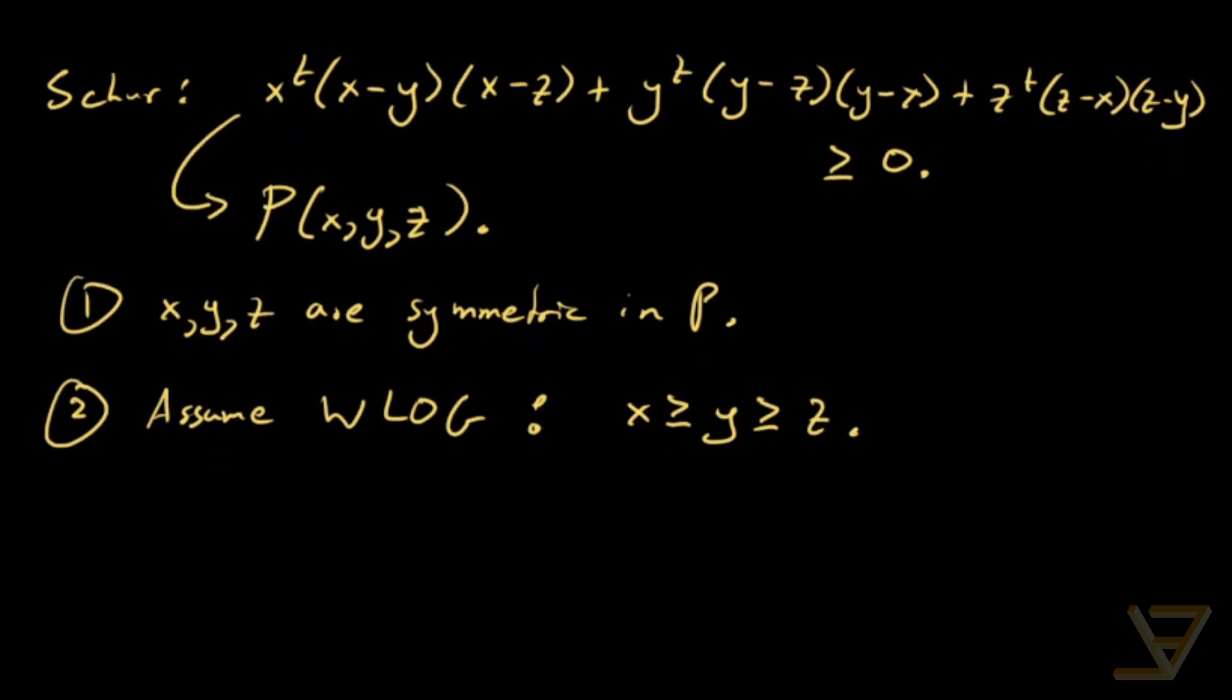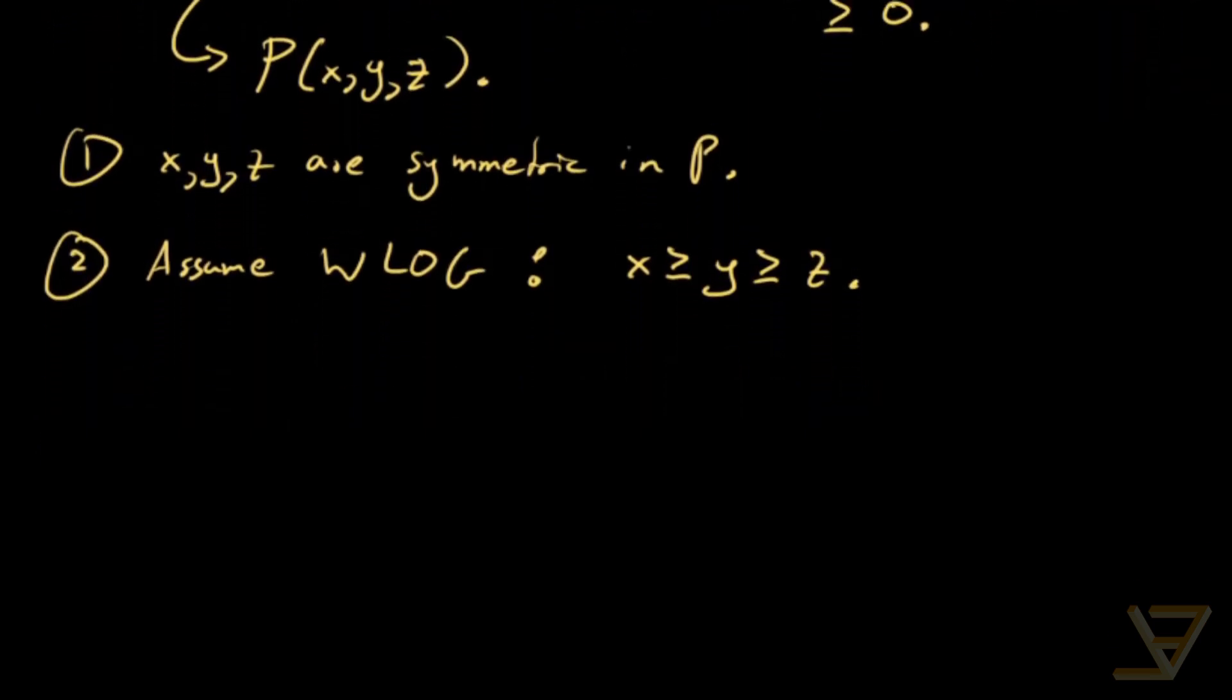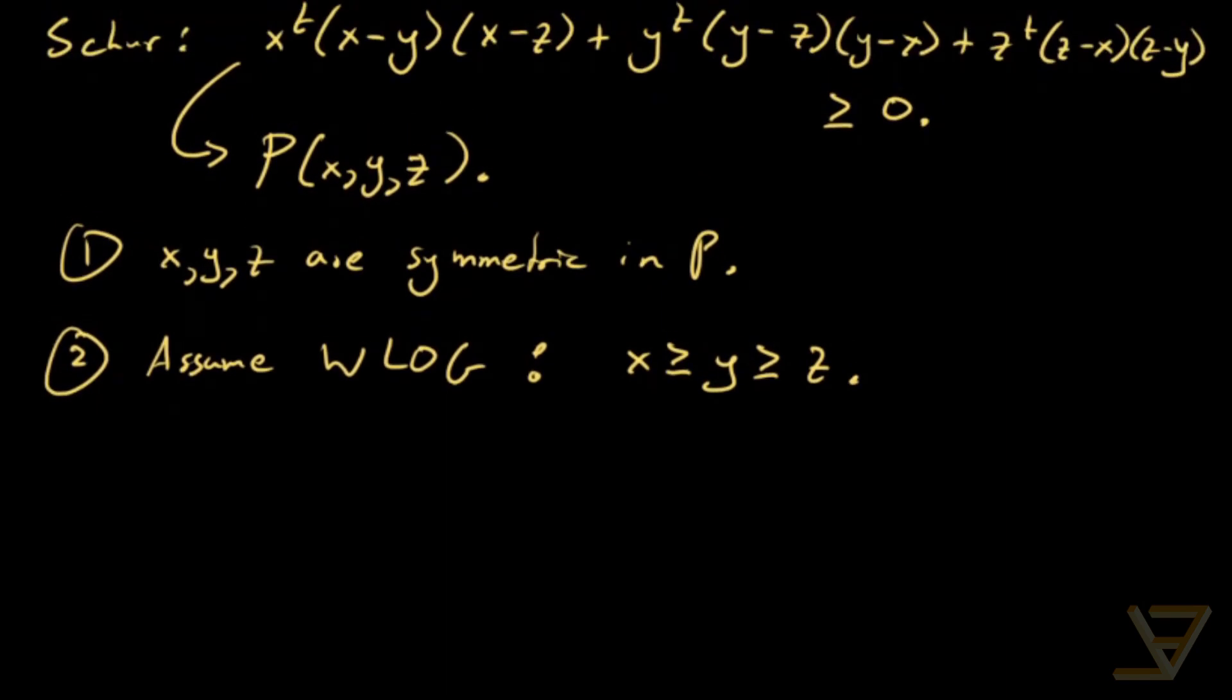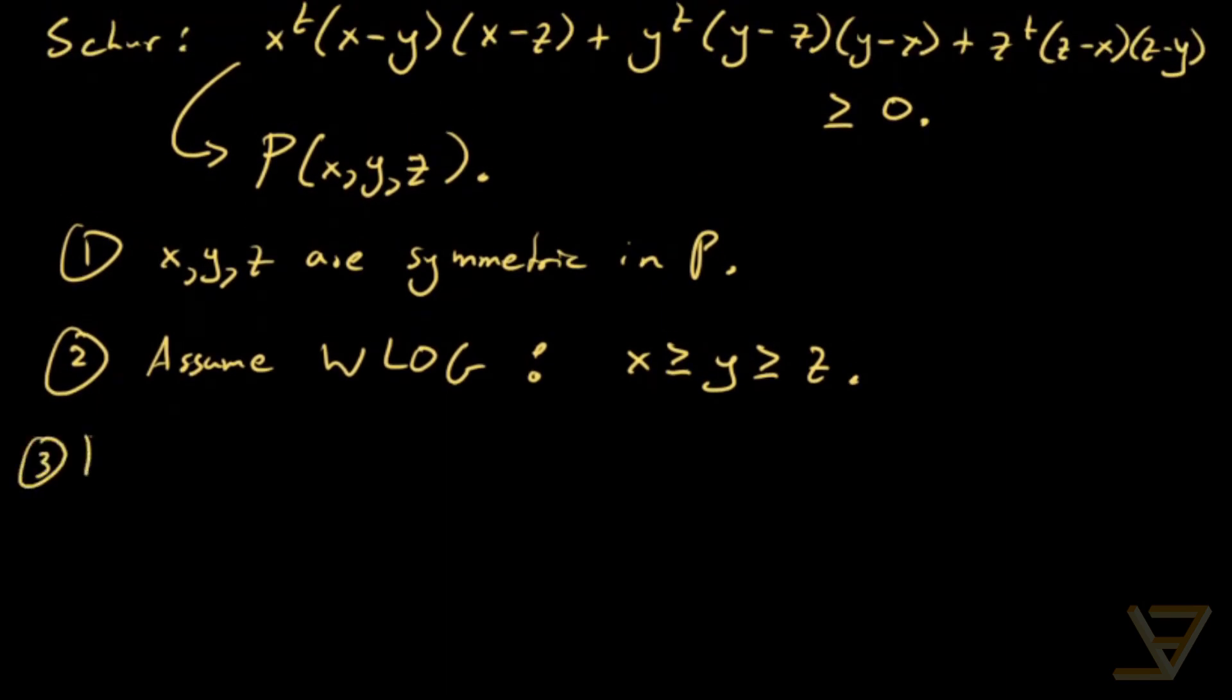And now what we're going to do is we're going to write P(x,y,z) in a different form. We're going to factor out this (x-y) and this (y-x). So what we get is that (x-y) times [x^t(x-z) - y^t(y-z)]